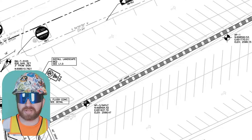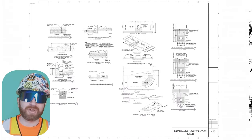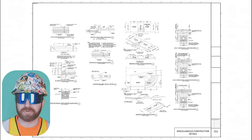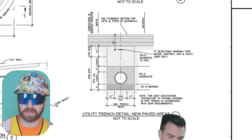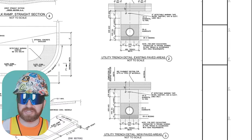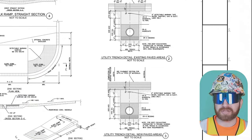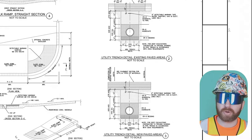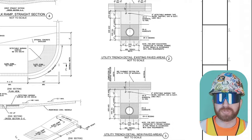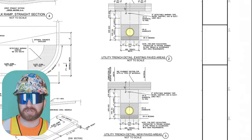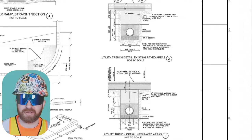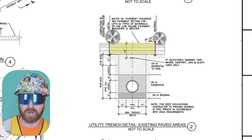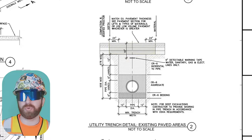Back on C0.2, we're going to focus on three details. Detail eight is the one we already looked at. Detail three is the utility trench detail in new paved areas, and detail two is the utility trench detail in existing paved areas. Since we're cutting into an existing parking lot to install that new 48-inch HDPE line, we use detail two — utility trench detail for existing paved areas. The fact that these details both exist tells us they're used in different conditions elsewhere on this drawing set.